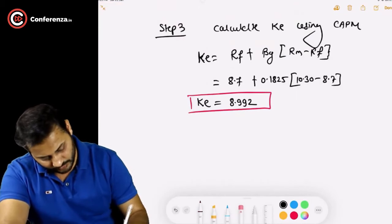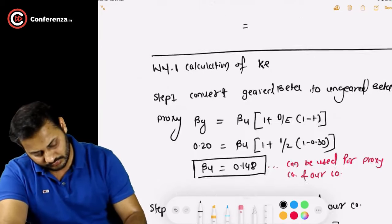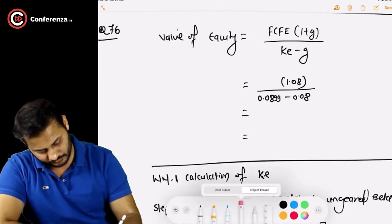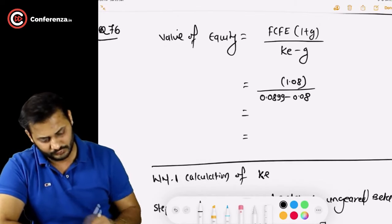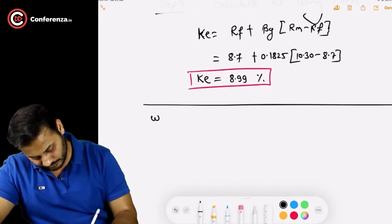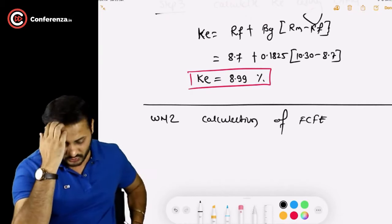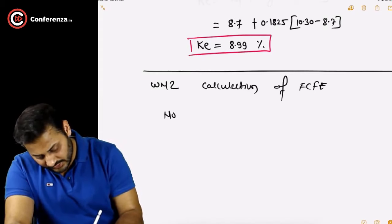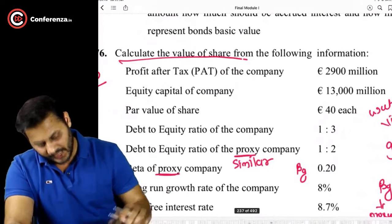The cost of equity calculation arrives at 8.992% — we can use 0.0899. Now comes the calculation of free cash flow to equity — Working Note 2. First, calculate the number of shares: total equity capital is 13,000 million euros and par value of each share is 40 euros, so total number of shares = 13,000,000,000 / 40 = 325,000,000 shares.